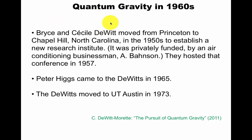Cecile and her husband, Bryce DeWitt, moved from Princeton to Chapel Hill, North Carolina in the 1950s, to establish a new research institute, privately funded. They hosted that conference mentioned in the LIGO article. Incidentally, Peter Higgs came there in 1965 and wrote one of his big Higgs papers there. And the DeWitts later moved to UT Austin. This is beautifully described in the biography of Bryce DeWitt.